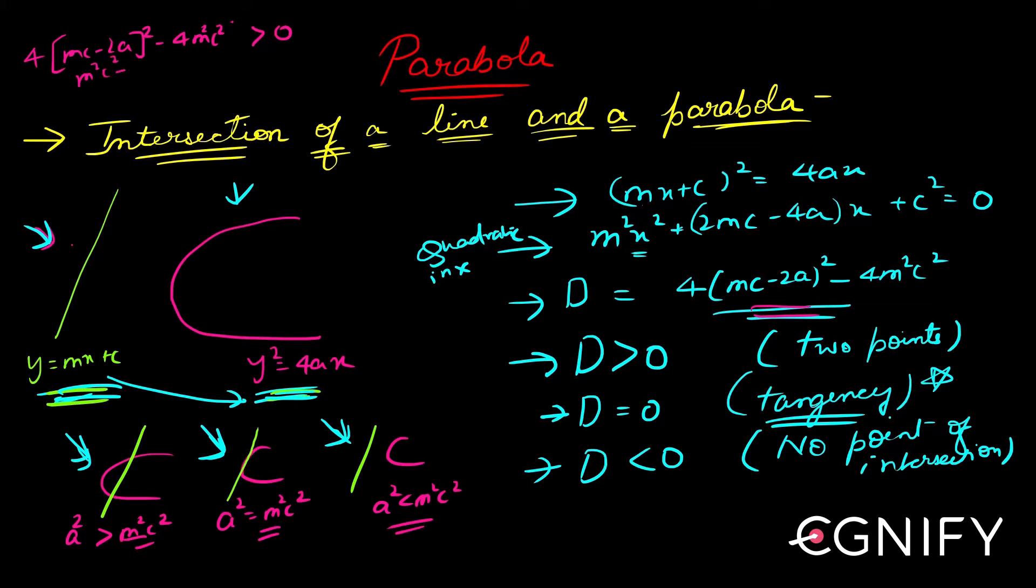I'll take 4 common: m squared c squared plus 4a squared minus 4mca minus m squared c squared greater than zero. This 4 and this 4 they got cancelled. So this and this gets cancelled.